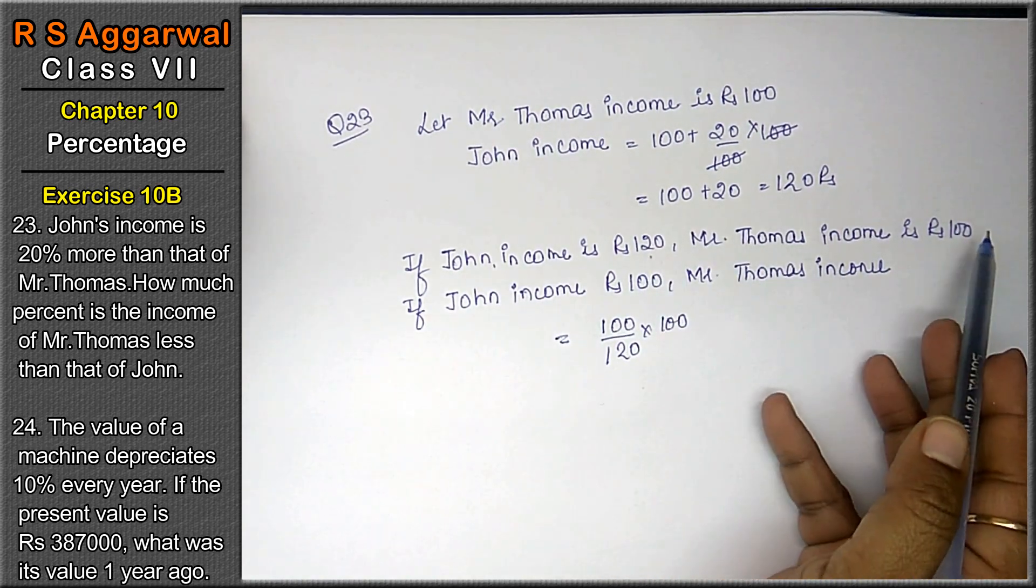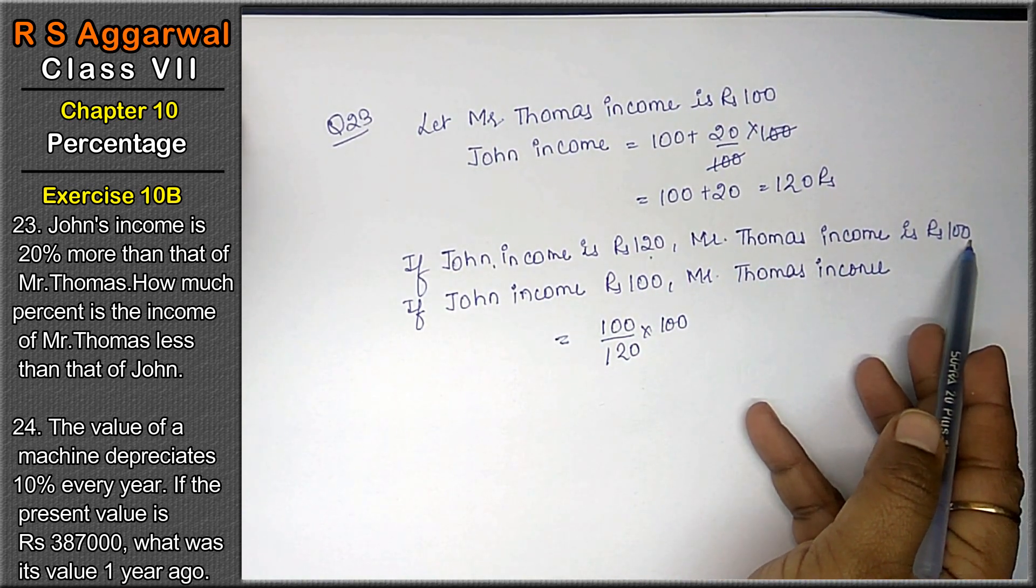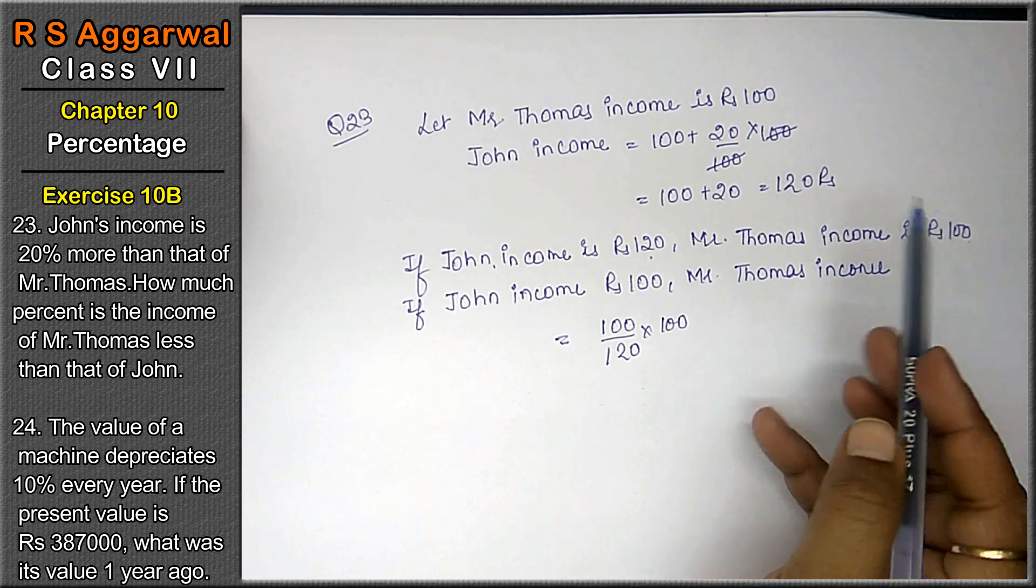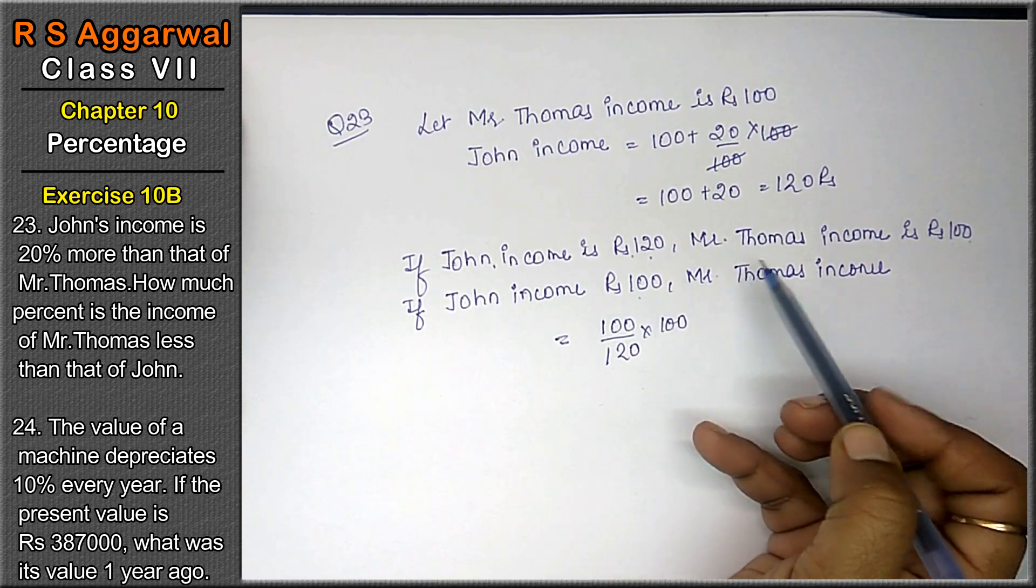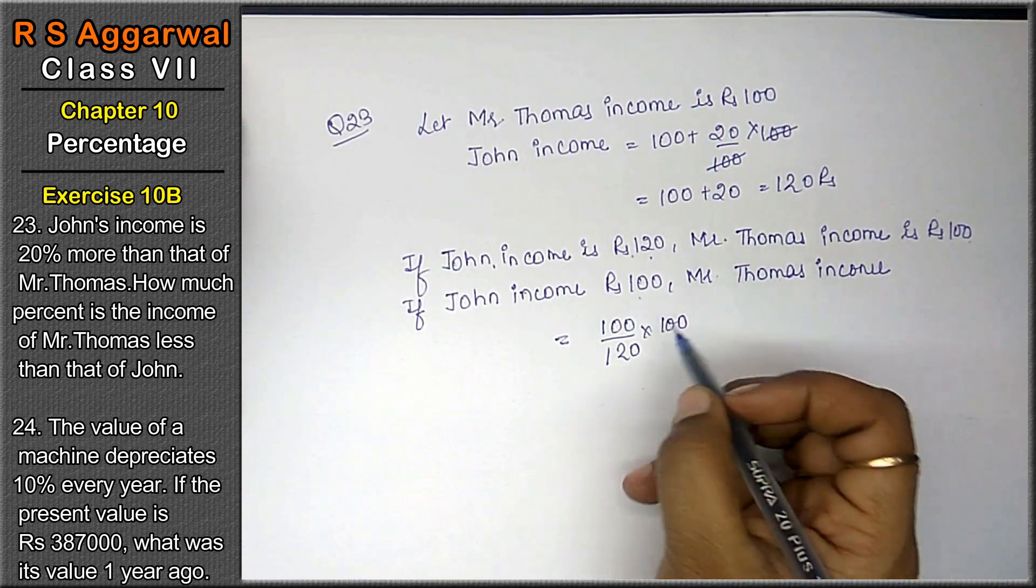Agar John's income Rs. 120 hai, to Thomas's income is Rs. 100. Agar John's income reduced Rs. 100 ho gayi, to kitna Thomas's income reduced ho jayegi?